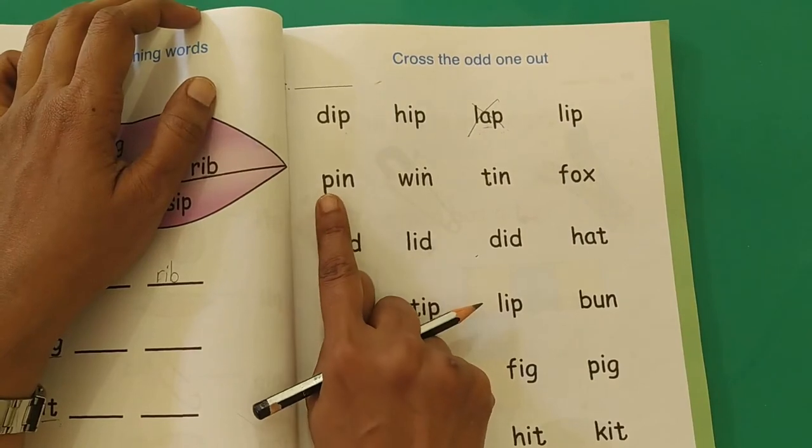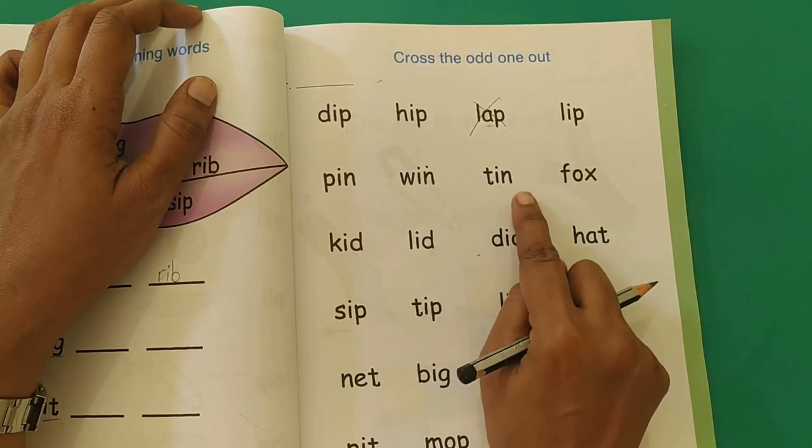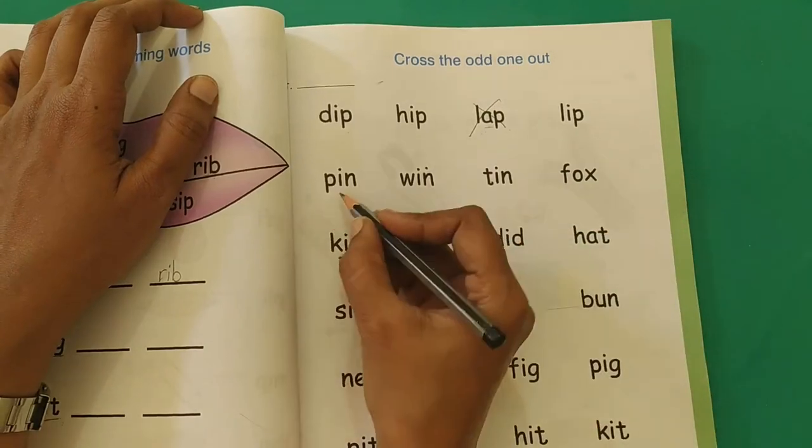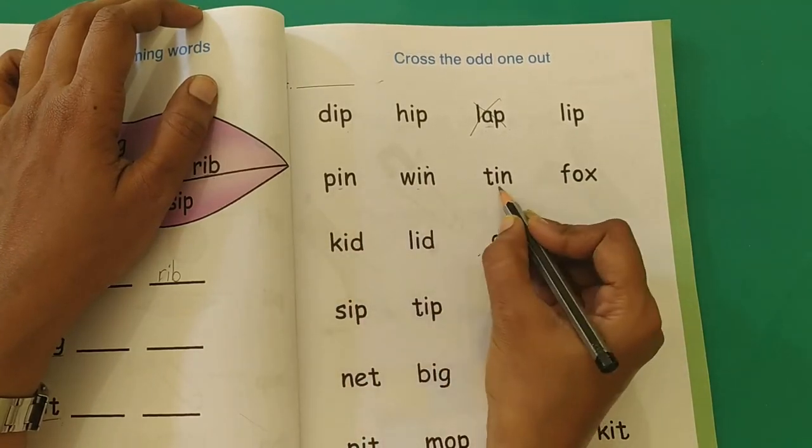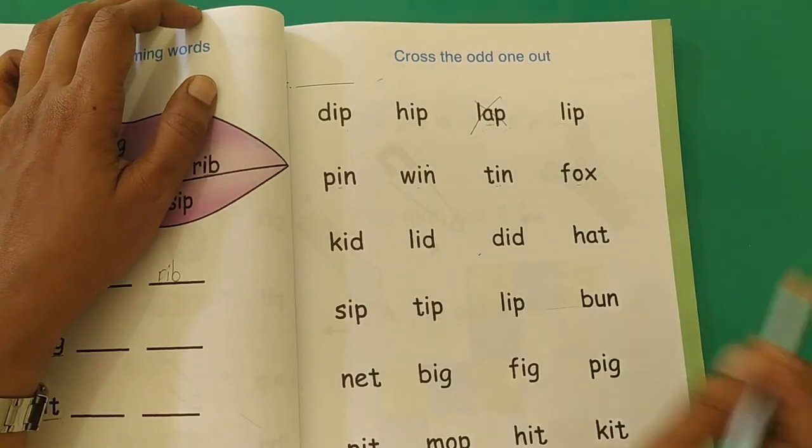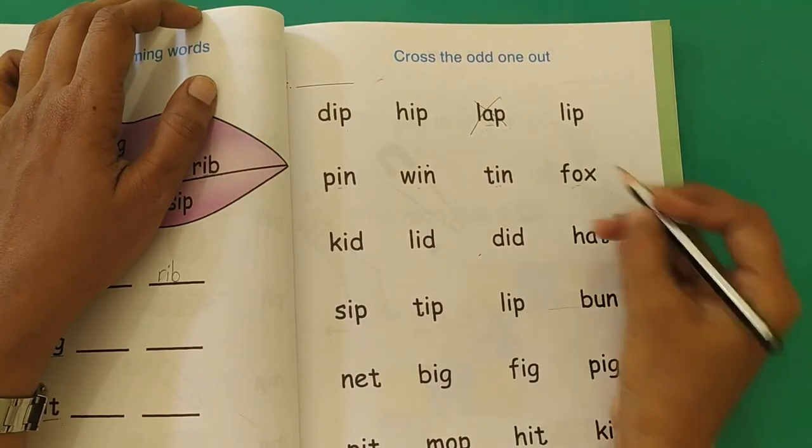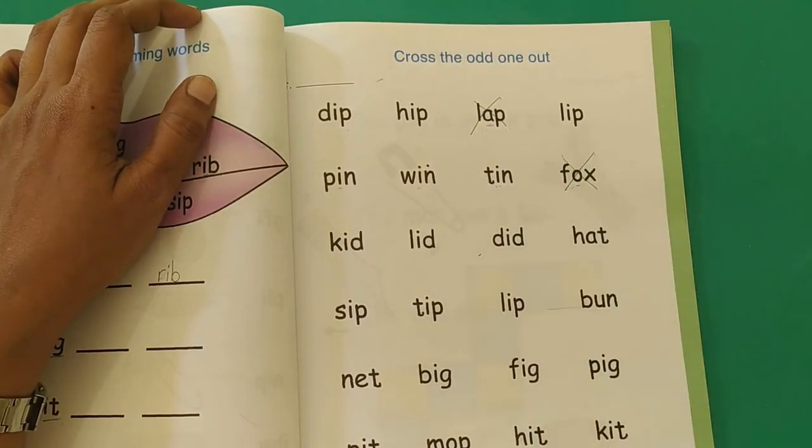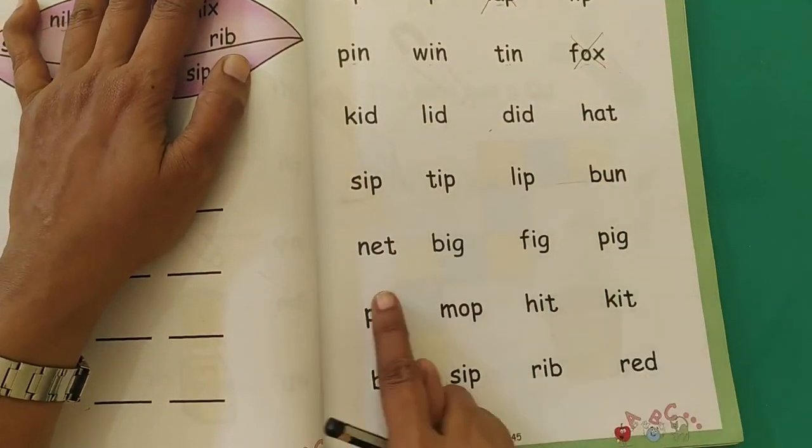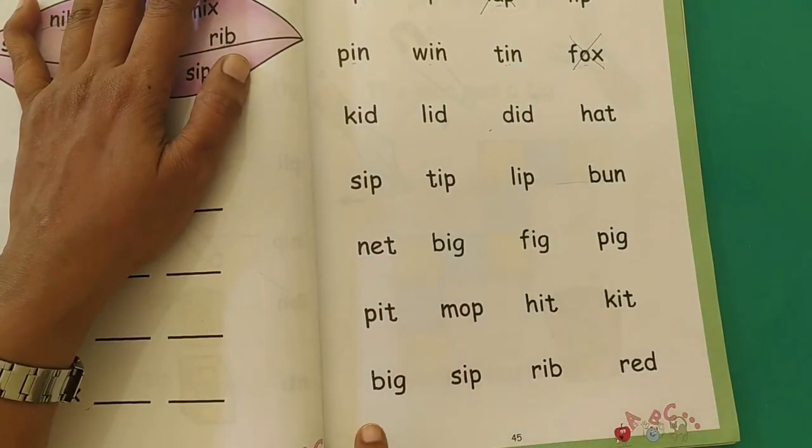Again in the next line, PIN, WIN, TIN, and FOX. These words have the vowel I, whereas this word has the vowel O. So which is the odd one out? This one, FOX. So we will cross out this word. In the same way children, for every row you have to search which word does not have the vowel I and you have to cross it out.